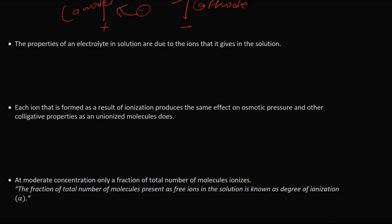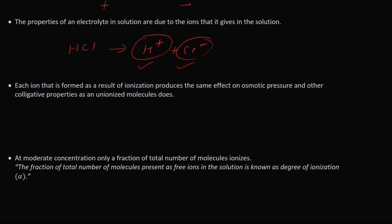The next postulate is: the properties of an electrolyte in solution are due to the ions it gives in the solution. So the properties of HCl entirely depend on H⁺ and Cl⁻. The property of the ionized molecule depends on the ions that it gives in the solution.